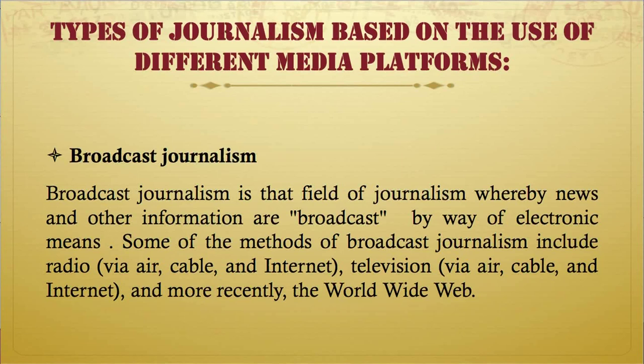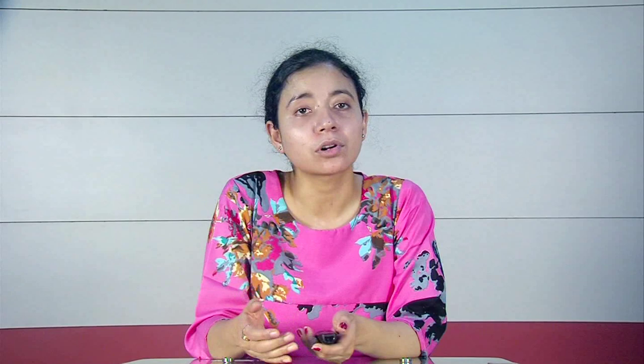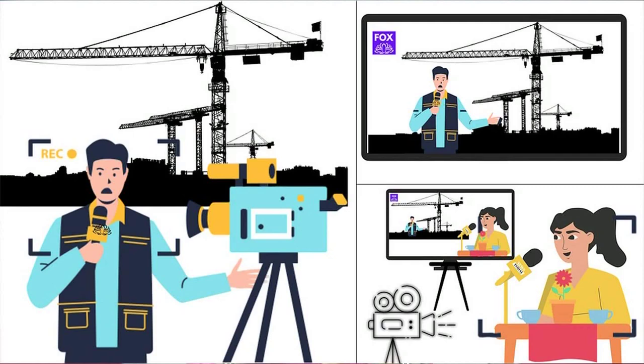The second important type of journalism based on media platforms is broadcast journalism. Broadcast journalism is that field of journalism whereby news and other information are broadcast by way of electronic means. Some of the methods include radio, television, and more recently the world wide web. In the present context, things are broadcast quite differently from what used to happen about 10 to 20 years back, because there have been a lot of developments and innovations in the field of technology.